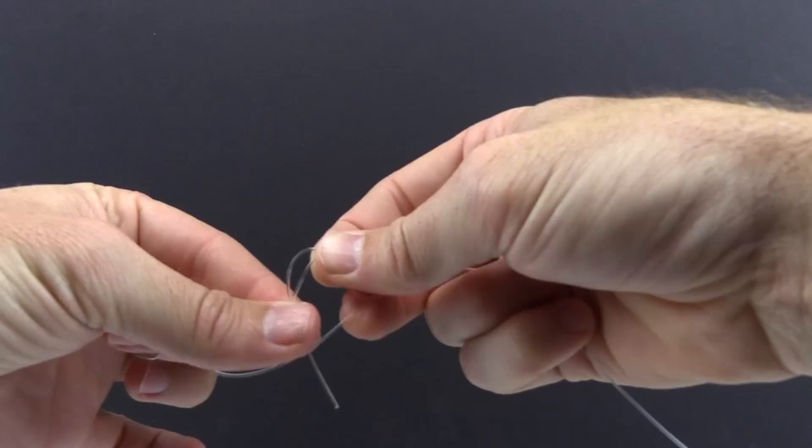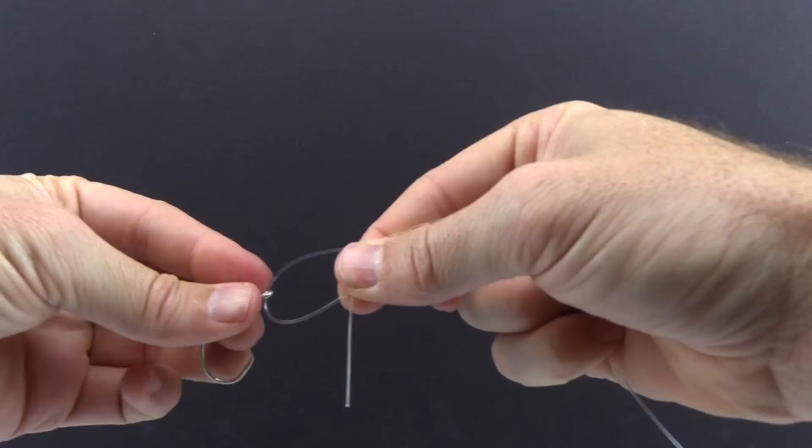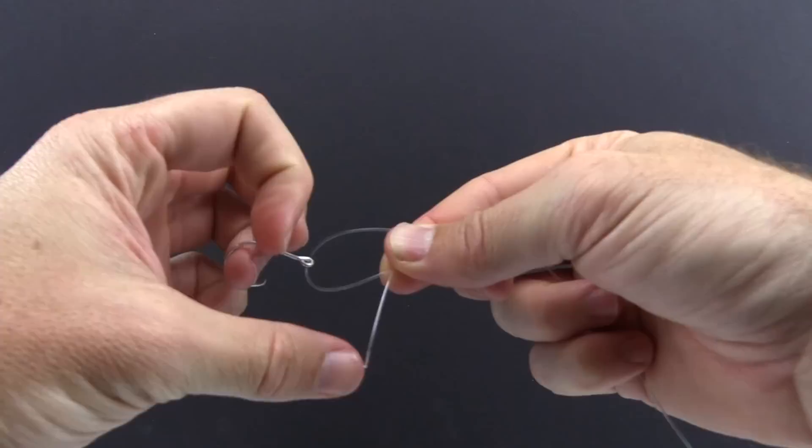We're going to go from the front, take the tag end through the big loop. So we basically just did the exact same thing just a second time. At this point this is a Davy knot.